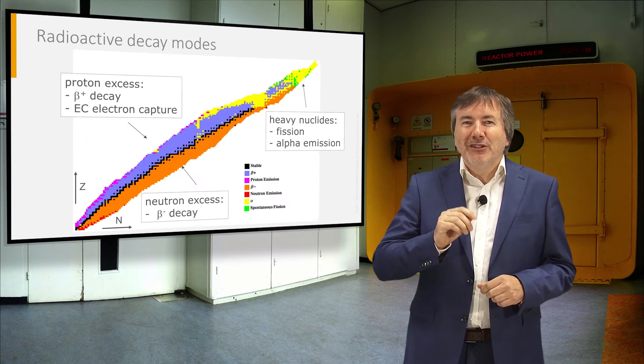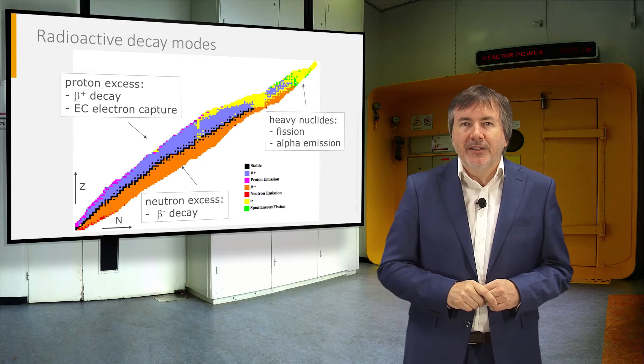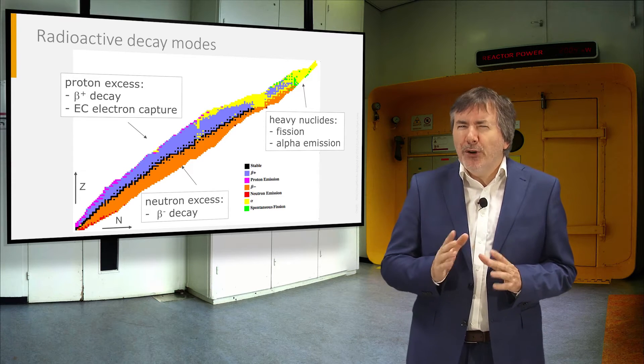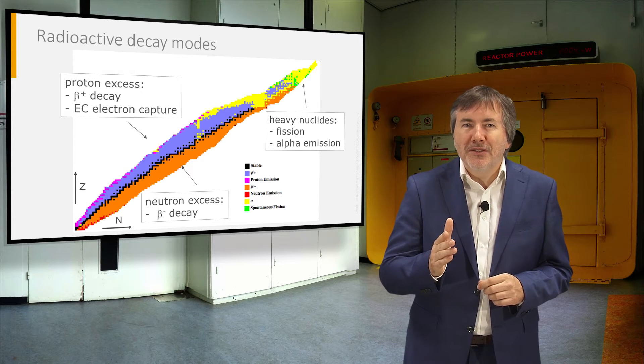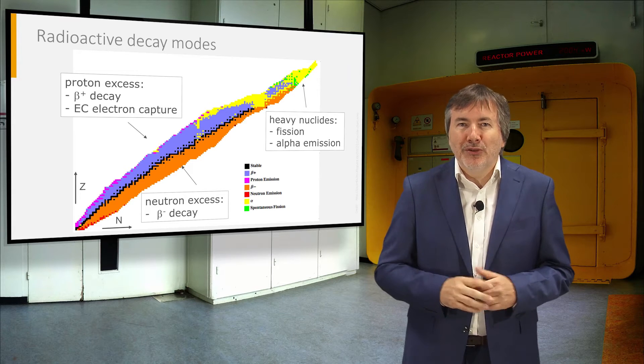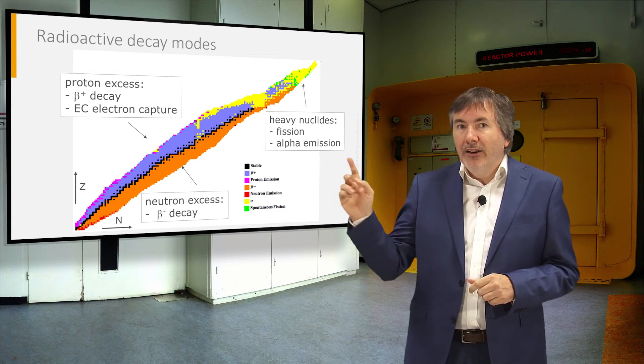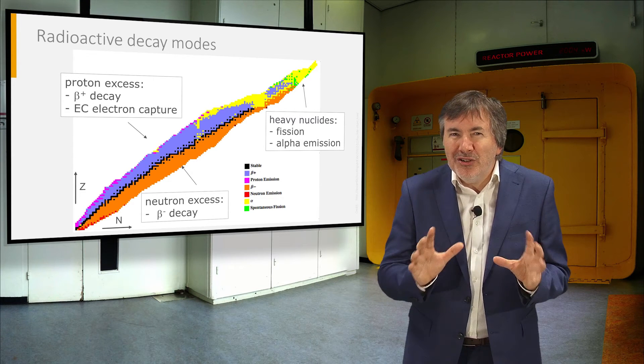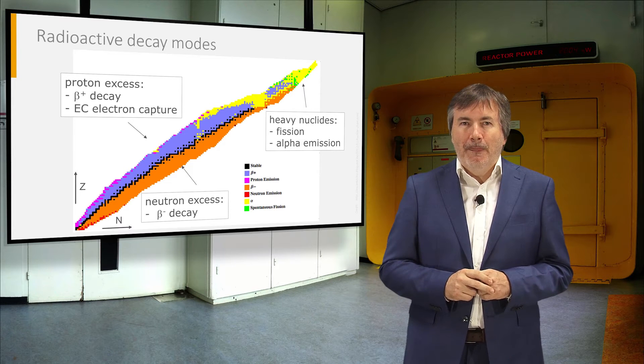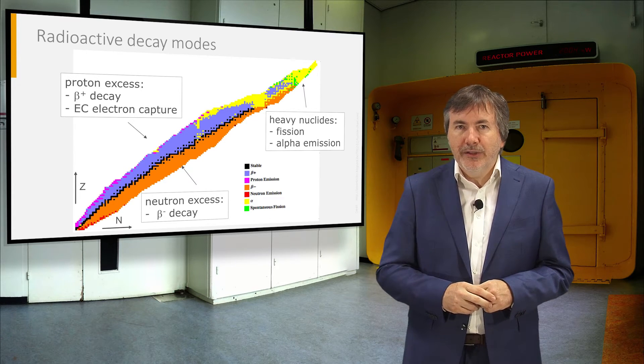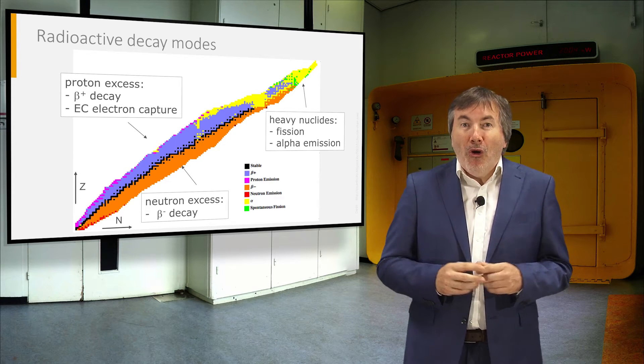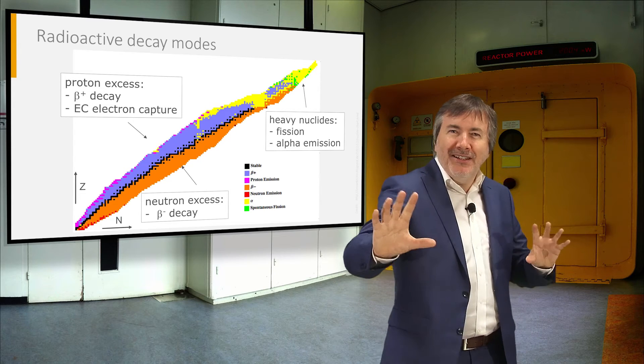On the chart of nuclides, we can see the different types of radioactive decay. The black dots represent the valley of stability. In the purple region, nuclides are in excess of protons, and decay by beta-plus emission, or electron capture, to reduce the proton number. In orange are the nuclides with too many neutrons. They can convert a neutron into a proton by beta-minus decay. The heavy nuclides, in yellow and green, can go on a nuclear diet by emitting a heavy alpha particle, or take a crash diet by splitting into two fragments.